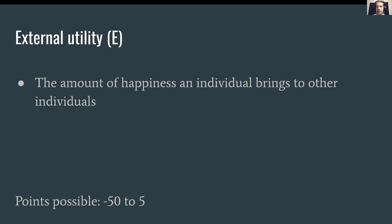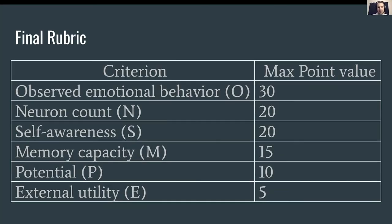External Utility is the final parameter. It's important for endangered species — the world experiences a little more sadness when the last member of an endangered species passes away. It's also relevant for people in comas: they may not be experiencing happiness themselves, but their continuing existence brings happiness to their family. This is the only parameter with a possible negative value — mosquitoes carrying malaria can spread suffering, and criminals may have negative utility in this category.